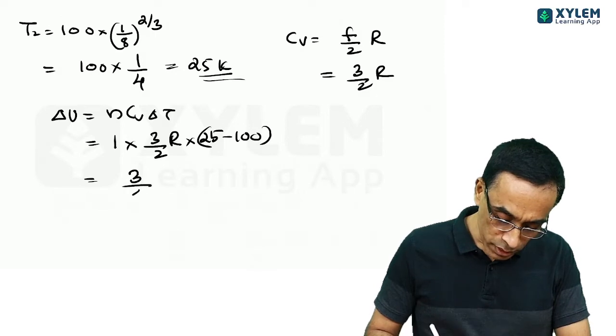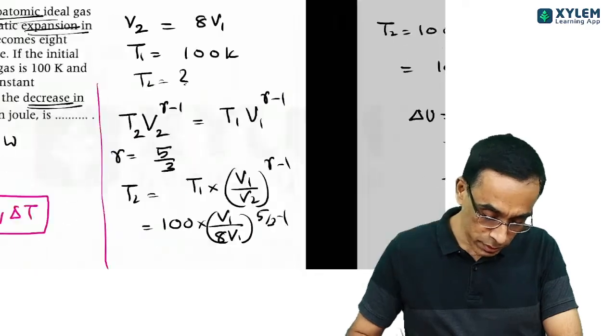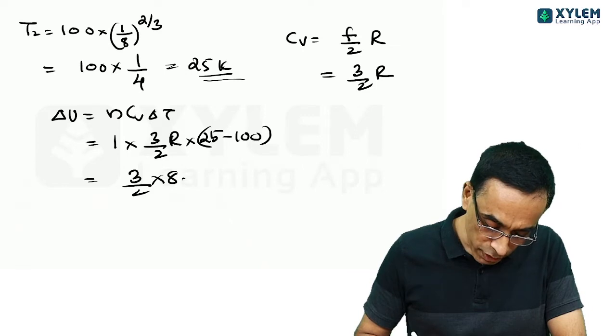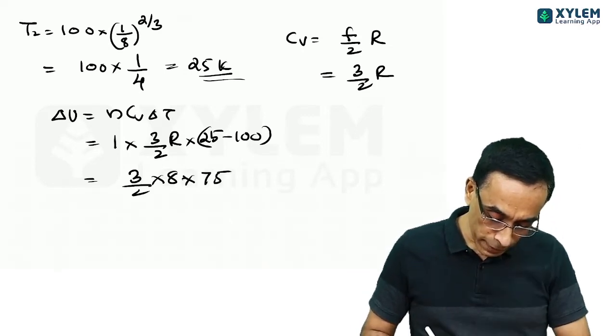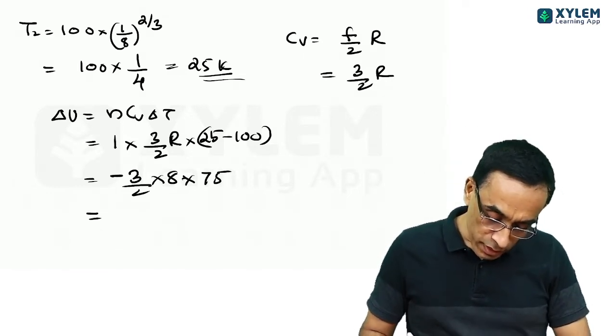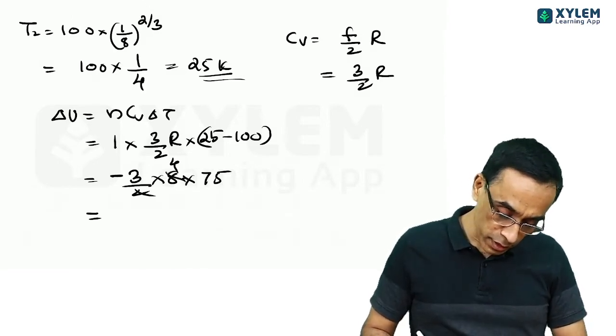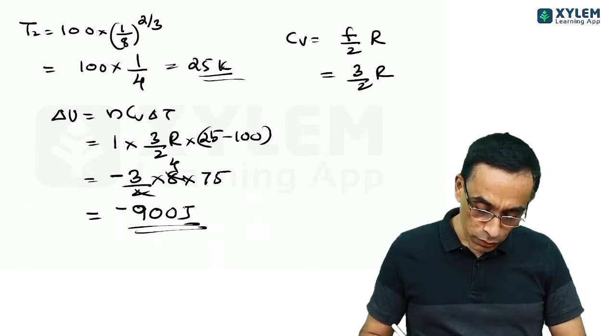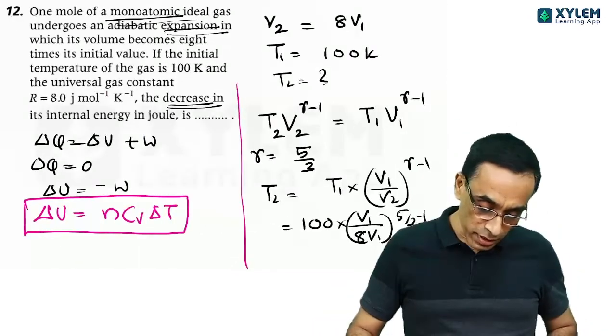So this will give you 3 by 2 into 8.314. It is given as 8 for easy calculation. 3 by 2 into 8 into 75. And this should be giving you, of course, minus sign is there. So this should give you 4 into 75 is 300, 300 into 3 is 900. So it will give you minus 900 Joule of internal energy change. Minus means there is a decrease.